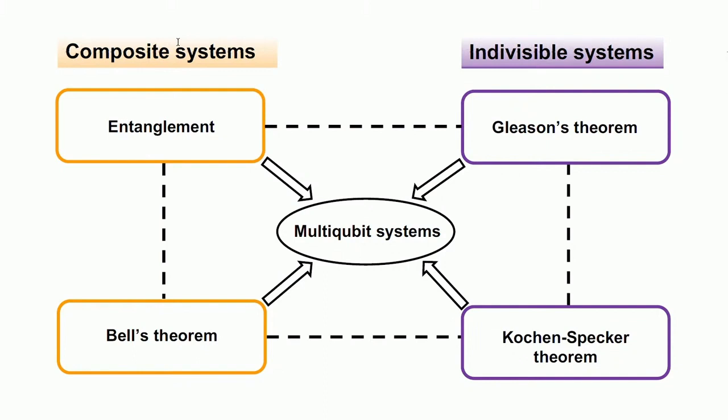There are also notions of non-classicality that apply even if you have a single system — for example, a qutrit — a single system which cannot be thought of as two systems, so basically prime dimensions. The first is Gleason's theorem, which I'll explain as we go on, and the other is the Kochen-Specker theorem, which corresponds to contextuality. We will look at the interplay of these notions in the context of multi-qubit systems.